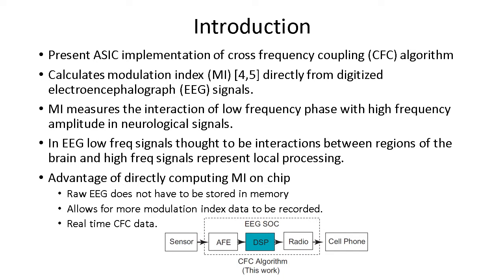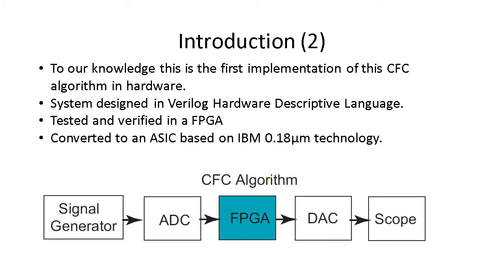Here we focus on the digital signal processing portion of this project. Ultimately, we'll want to combine it with the sensor amplifier and analog-to-digital converter, and then store the information in memory to transmit it to a phone. To our knowledge, this is the first time this cross-frequency coupling algorithm has been implemented in hardware. The system was designed in Verilog and then tested and verified on an FPGA. Test signals were loaded into a signal generator and then passed through an analog-to-digital converter and then to our FPGA, and the computed CFC values were passed to a laptop for verification. After the design was converted to an ASIC based on IBM 0.18 micrometer technology.